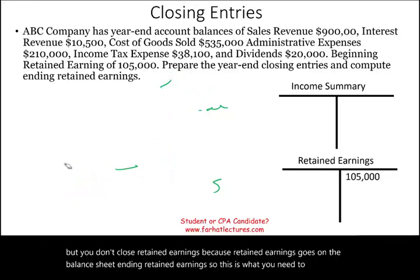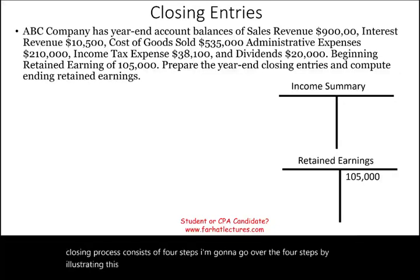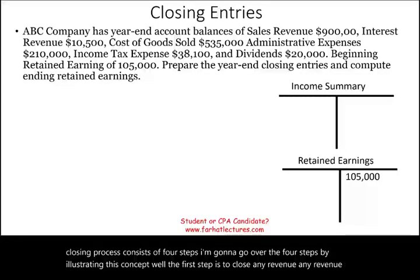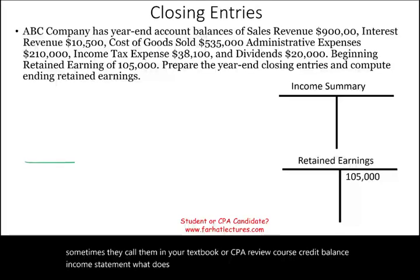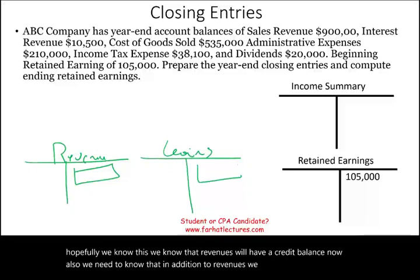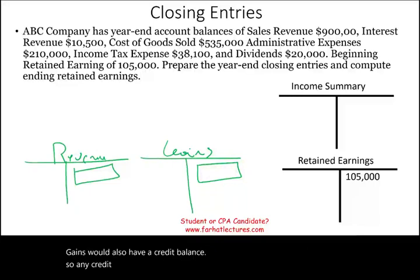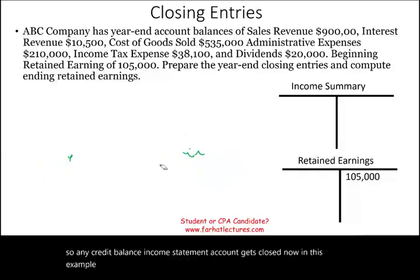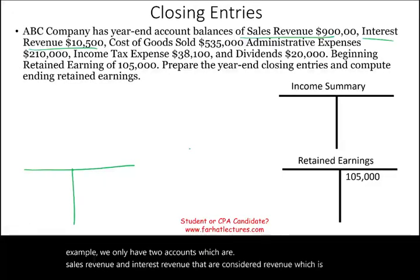The closing process consists of four steps. Step one is to close any revenue — sometimes called credit balance income statement accounts. Revenues have a credit balance, and gains also have a credit balance. In this example, we have two revenue accounts: sales revenue and interest revenue. These are income statement accounts with a credit balance.